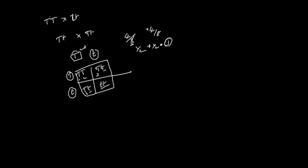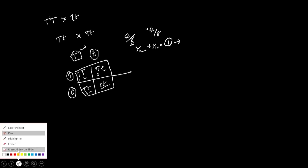This is the monohybrid and dihybrid. This is the total number of alleles. This is the simple equation.